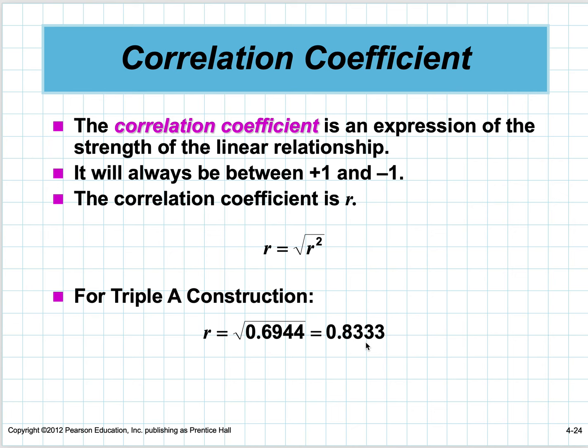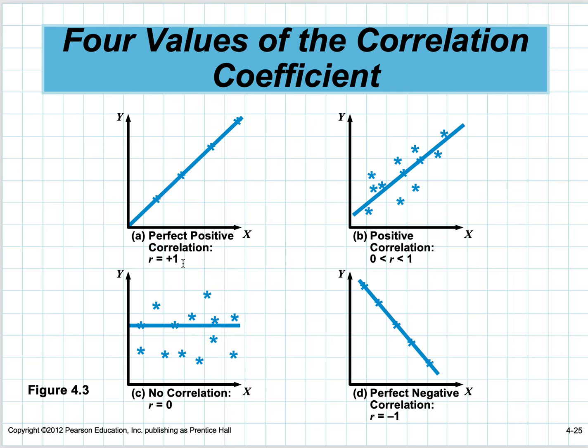When r equals one, it's a perfect line—every point lies on it. If it's negative one, every point lies on a line going downhill. Between zero and one, the line goes uphill but points don't all lie on it. The closer it gets to zero, the more scattered. When the slope of the line is zero, it means there's no relationship.